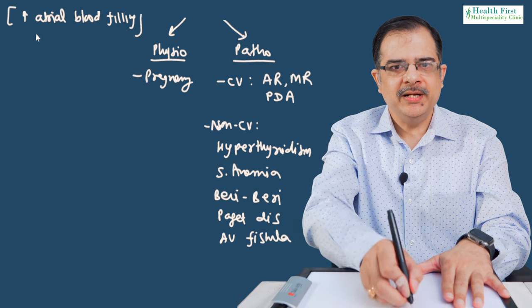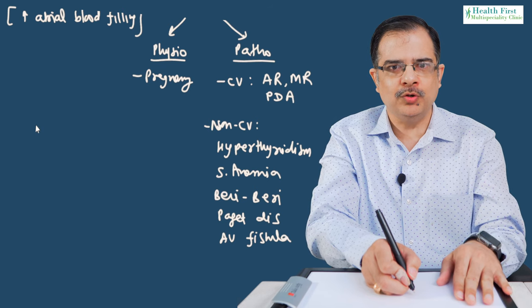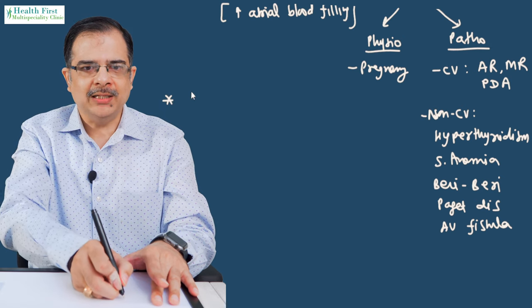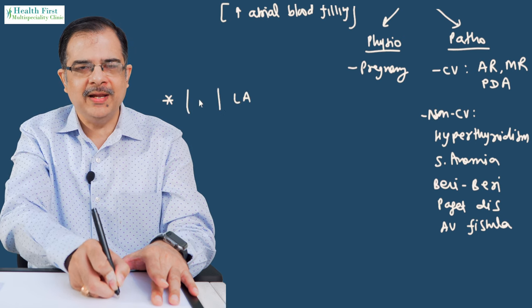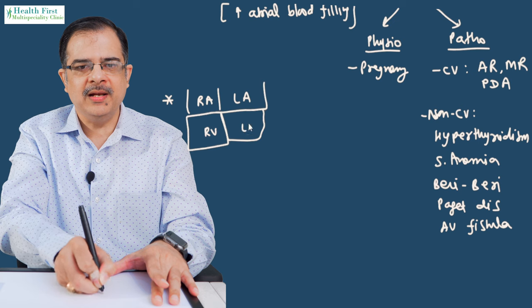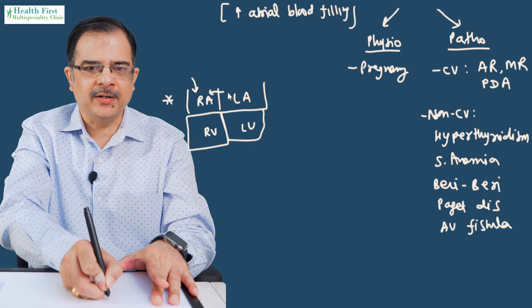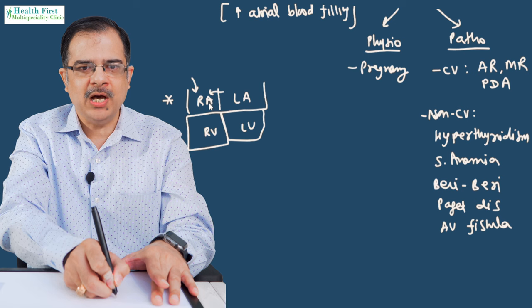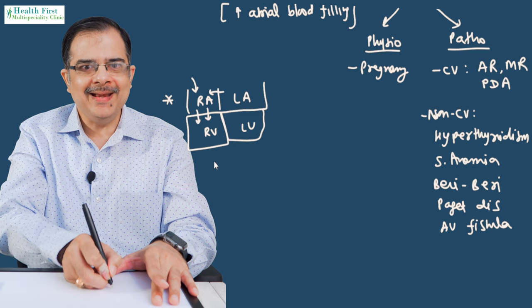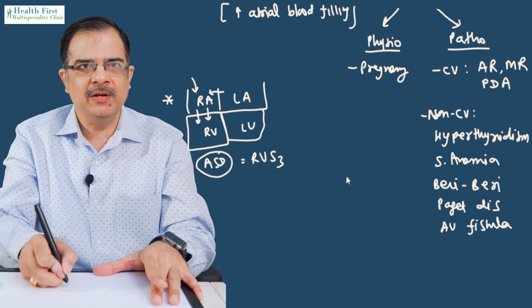There are other miscellaneous conditions where atrial blood filling can be increased, depending on which side of the heart is affected. For example, if there is an atrial septal defect, extra blood comes from the left atria into the right atria. As a result, during diastole, more blood goes to the right side. So atrial septal defect will cause a right-sided S3.